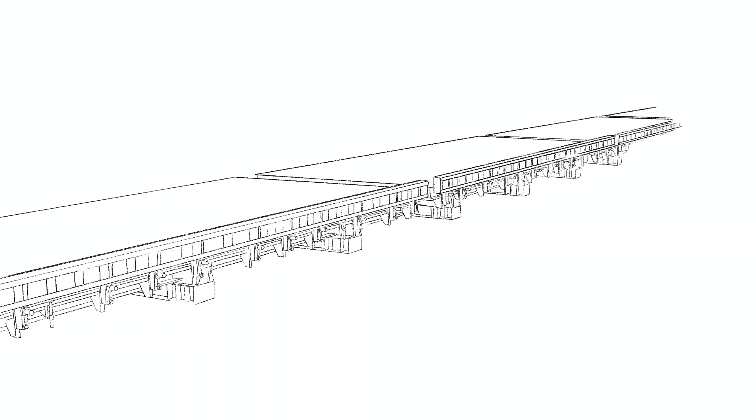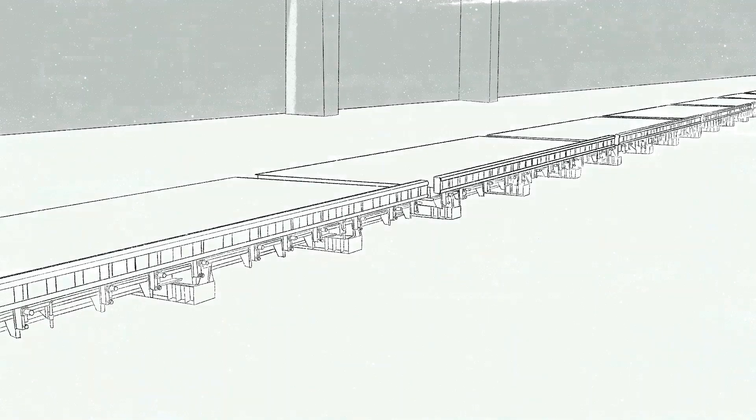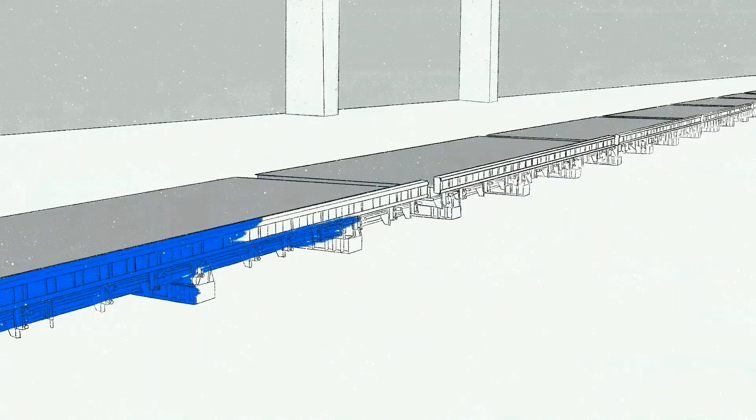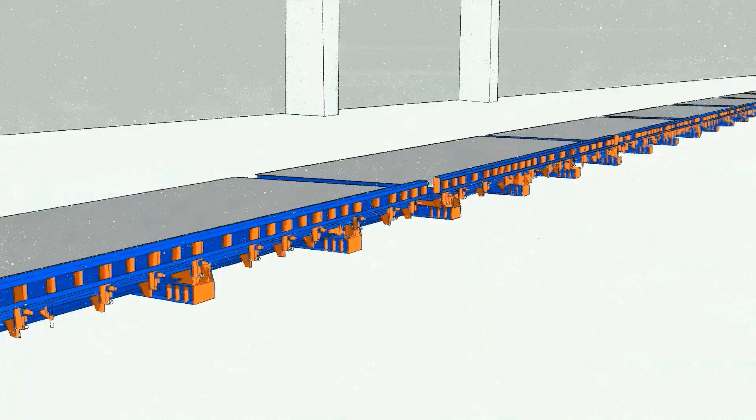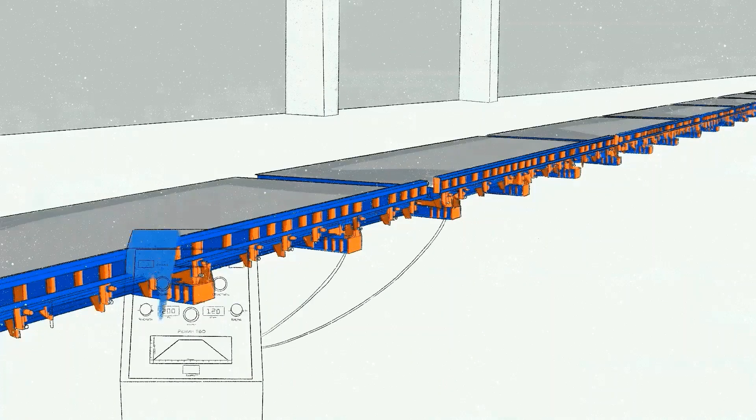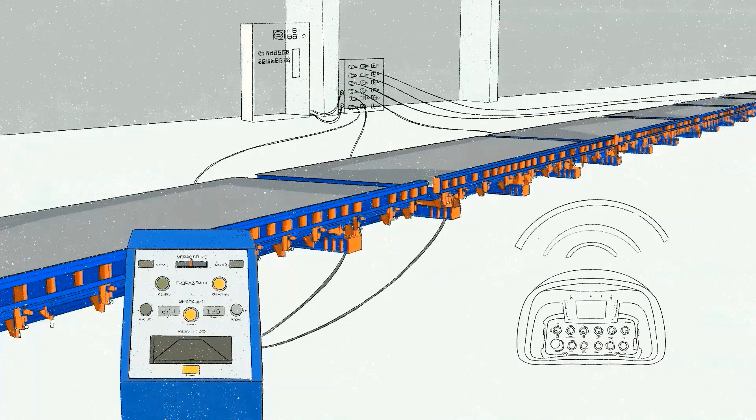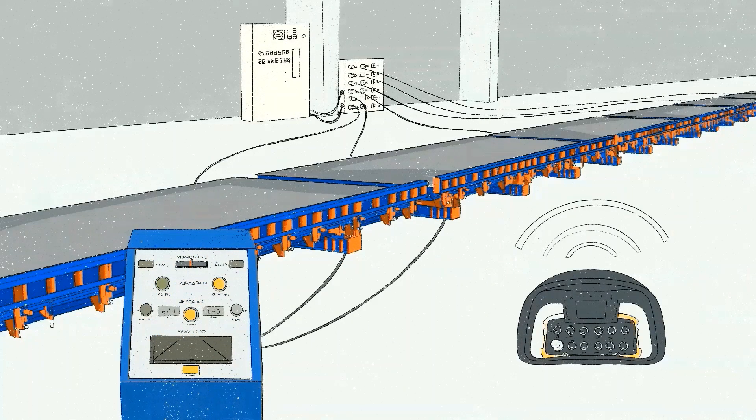To increase the volume of production, tilting tables can be connected into a single production line with a length of up to 100 meters. There is also a control panel which is responsible for lifting the table, switching the vibrators on, and regulating the temperature of the molding surface. One control panel can have two tables connected to it.